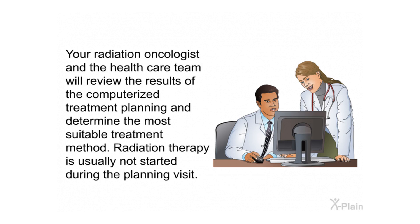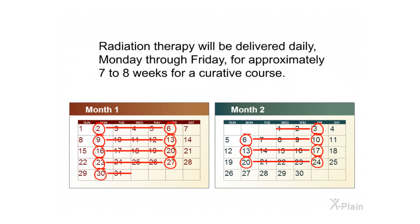Your radiation oncologist and the health care team will review the results of the computerized treatment planning and determine the most suitable treatment method. Radiation therapy is usually not started during the planning visit. Radiation therapy will be delivered daily, Monday through Friday, for approximately 7 to 8 weeks for a curative course.